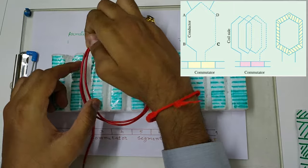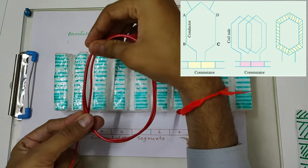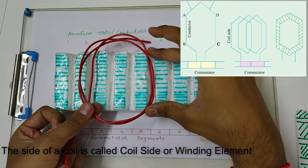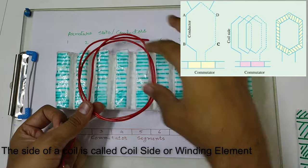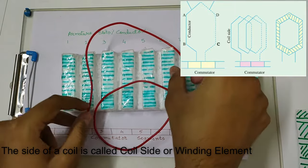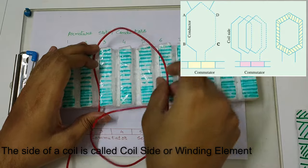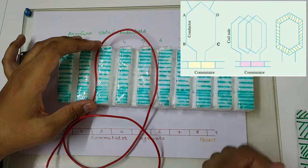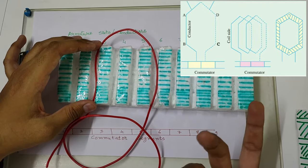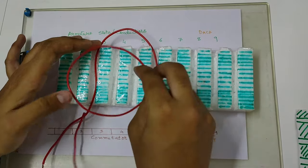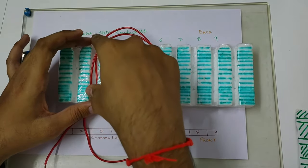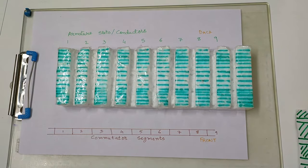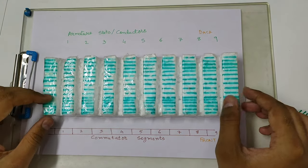Now, if it is a multi-turn coil, then one side is called a coil side. This is one coil side and this is the other coil side. If it is a single turn coil, then the conductors on both sides are called the coil side. So it can be a multi-turn coil or a single turn coil. If it is a multi-turn coil, then all the turns comprising one side are called the coil side. Now there is another concept which is very important — it is called pole pitch.